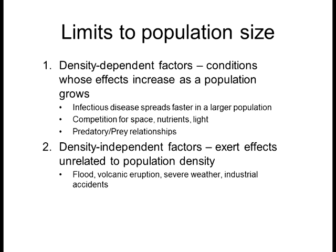Parasites spread faster when the population is large — as with the cordyceps fungi, when a population gets extremely large they're very susceptible to parasitic infection, whereas if the population is small there's less likelihood of it spreading. Then of course there's predation: as the prey population goes up, predators have more to eat and their population goes up. As prey population goes down, so does the predator population. These two correlative events are cyclical — one trails right behind the other — typically fluctuating over decades.